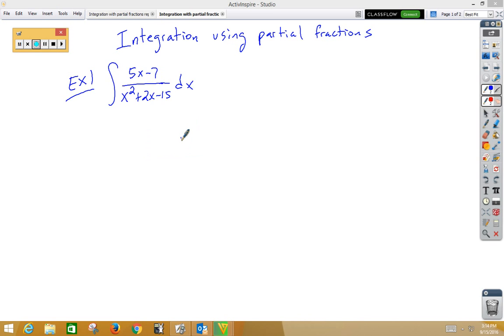We want to start off by factoring the bottom. The bottom would factor as x plus 5 and x minus 3. We now want to break up this original fraction as A over x plus 5 plus B over x minus 3, and we want to make a common denominator.